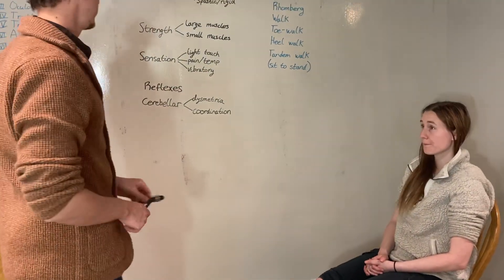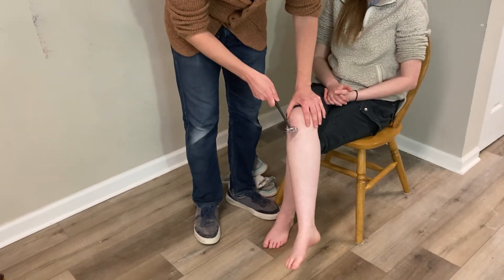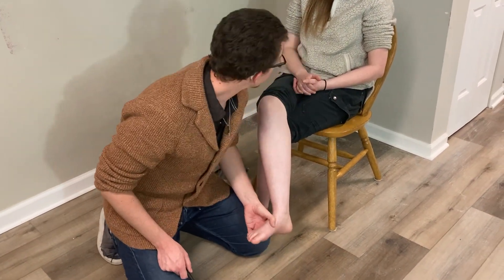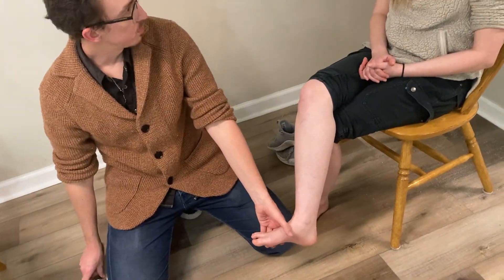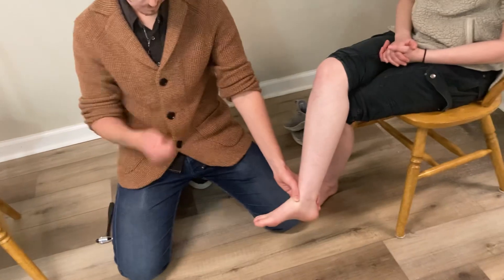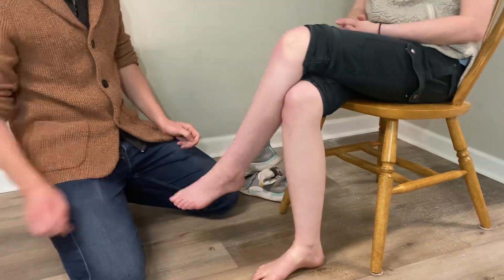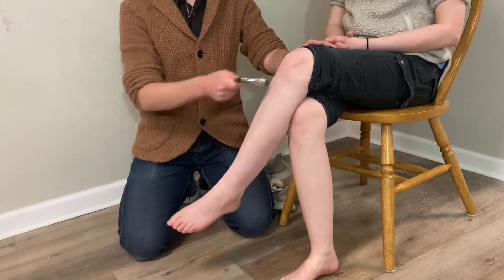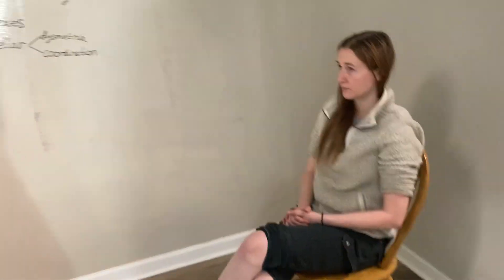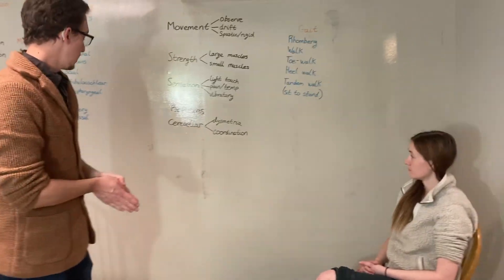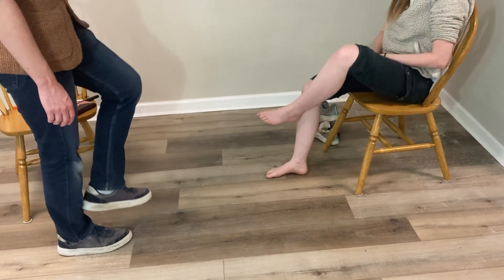I'm going to go through your reflexes. I'm going to get you to cross your legs — this one over that one. Totally relax this leg. I'm going to pull on your foot here. I'm going to scratch the bottom of your foot — I'm just using the back of my thumb. Stay totally relaxed. Let's do the other one. Now can I get you to run your right heel down your shin. Other side.